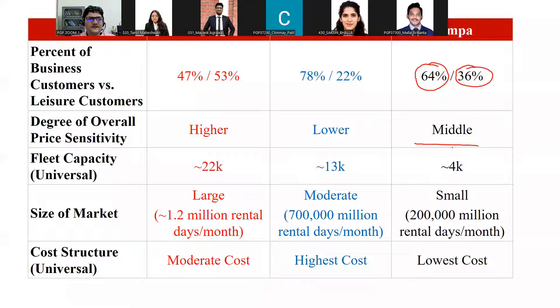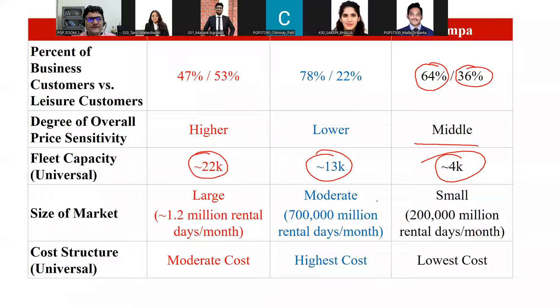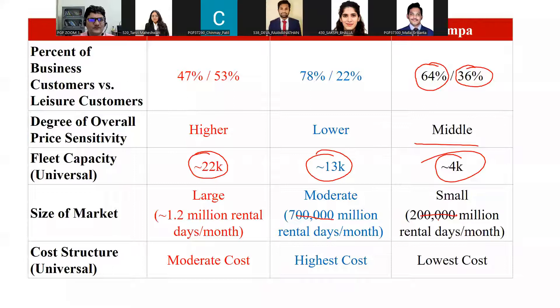As far as fleet capacity is concerned, initially 22,000 cars are given to Orlando, 13,000 to Miami, and 4,000 to Tampa. Orlando is the largest market with 1.2 million rental days per month. To clarify, 'rental days' means: if one car is rented for one day, that is one rental day. Orlando has 1.2 million rental days, Miami has 0.7 million, and Tampa has 0.2 million. The cost structure shows Orlando has moderate cost, Miami has the highest cost, and Tampa has the lowest.